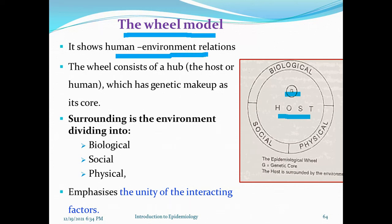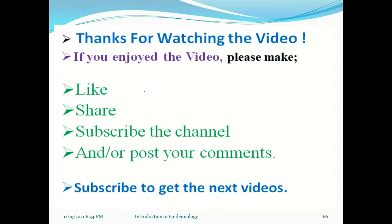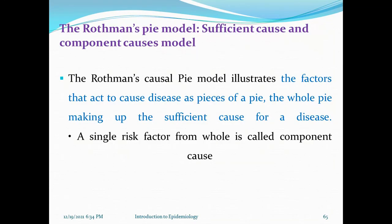The wheel model shows the human and environment relationship. It studies the relationship between the human host and the surrounding environment. The host, which has a genetic makeup as the core, is surrounded by the environment divided into biological, social, and physical factors. The model emphasizes the unit of interacting factors between the host and these environmental components.